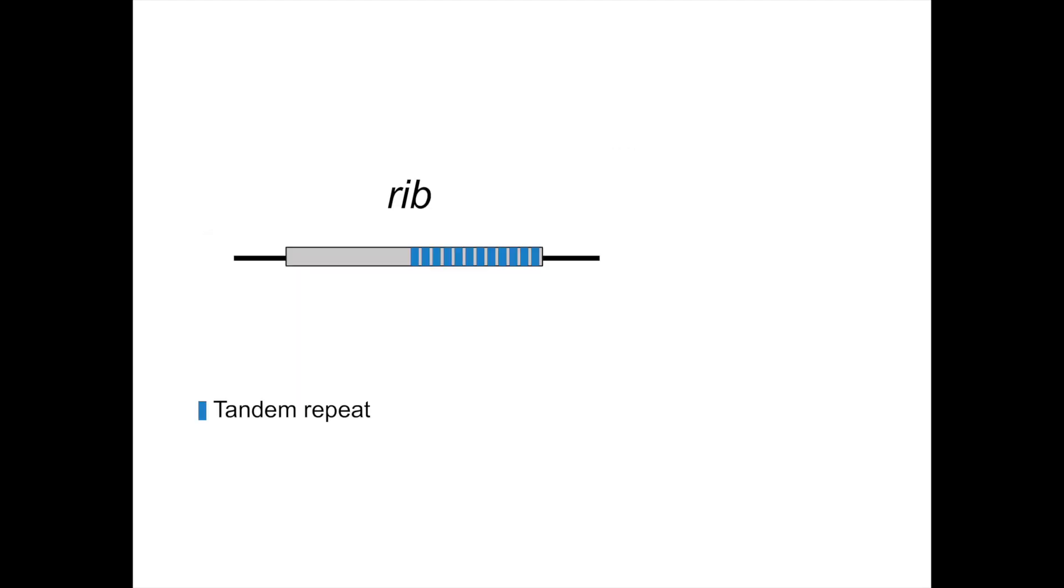Another target that had a unique sequence pattern was the one coding for the surface protein rib. In this case, strains from infection had actually fewer tandem repetitions within the coding sequence of this gene than those strictly from carriage.